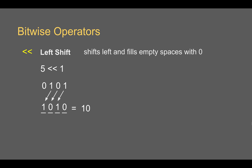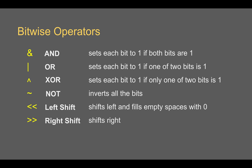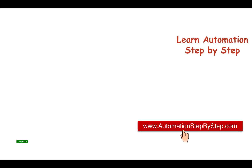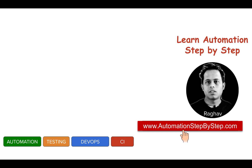Similarly, right shift moves bits to the right and then converts back to decimal. That covers all the bitwise operators in JavaScript. I hope this was very useful and now you have a good understanding of how bitwise operators work. I will meet you in the next session of JavaScript. Thank you for watching.